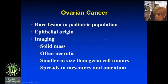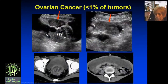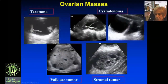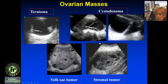Ovarian cancer is really rare — less than one percent of cases in children. It is epithelial, it's a solid mass, mean size four centimeters or less — much smaller than the other tumors — and it does go to the mesentery and omentum. An adolescent patient with abdominal pain: this is an omental metastasis. Here's the CT showing the ovarian mass and omental caking — ovarian cancer.